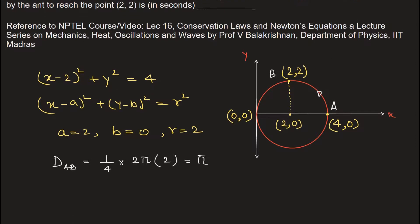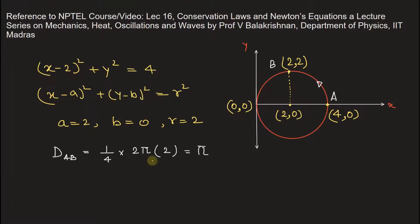Now the time taken by the ant to reach from point A to B, t_AB, will be equal to d_AB divided by the velocity of the ant.